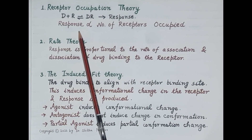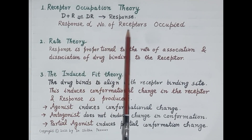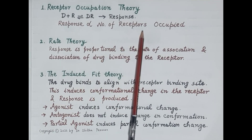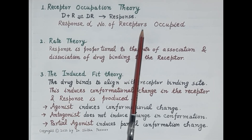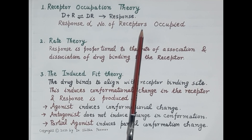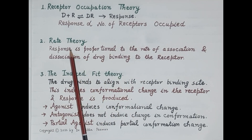The first is receptor occupation theory. It states that the response produced by a drug is directly proportional to the number of receptors occupied — that is, more receptors occupied means more response. To produce the maximum possible response, Emax, a drug must occupy 100% of the available receptors in the tissue or system.